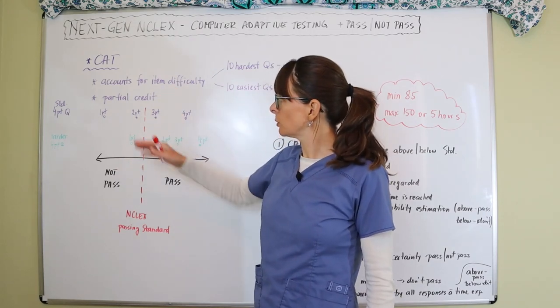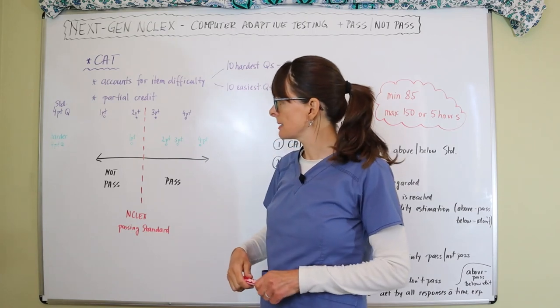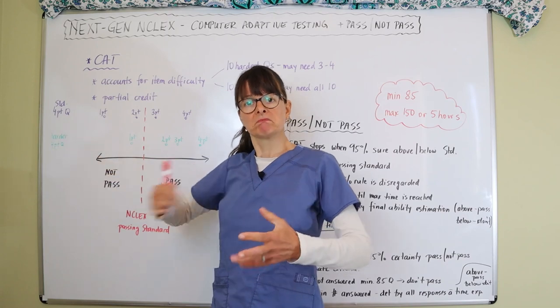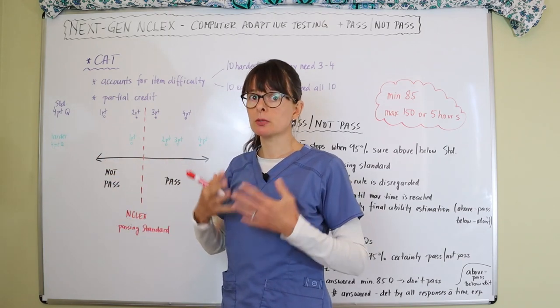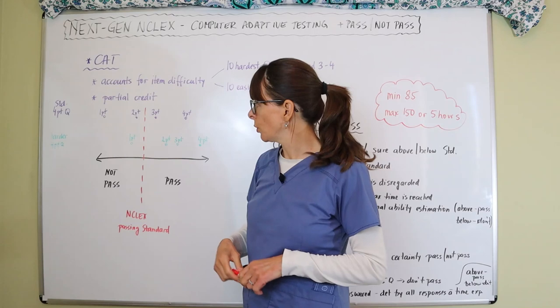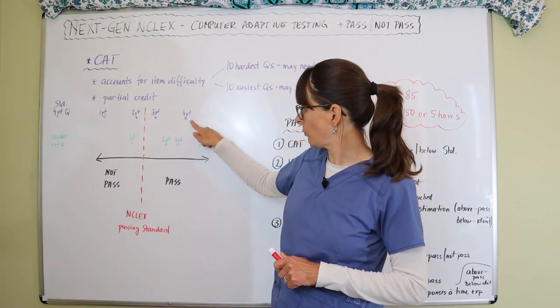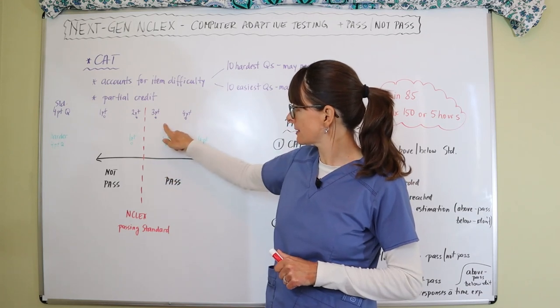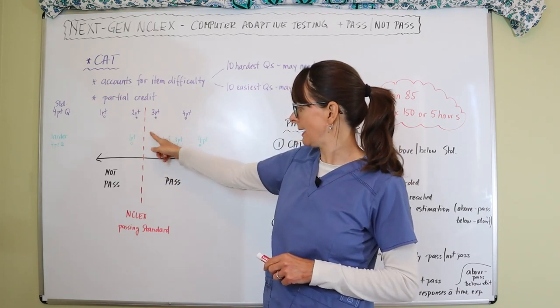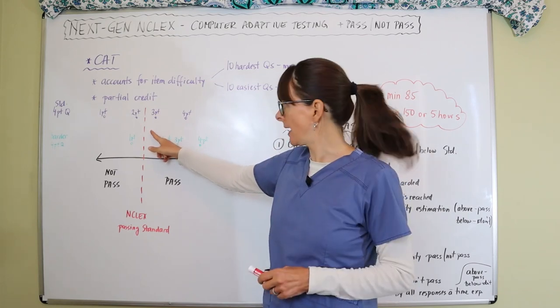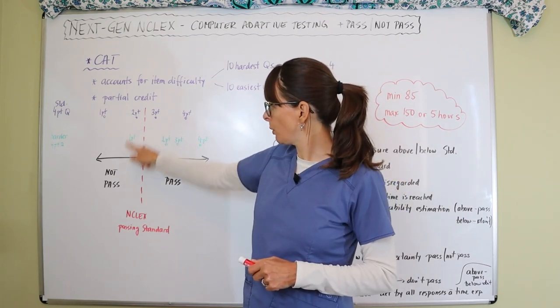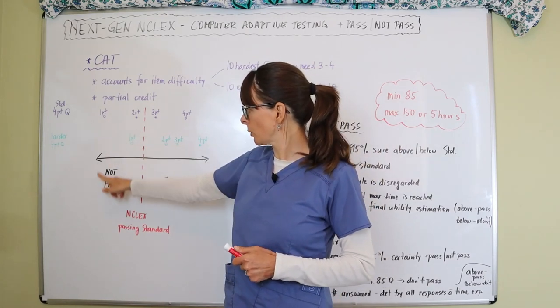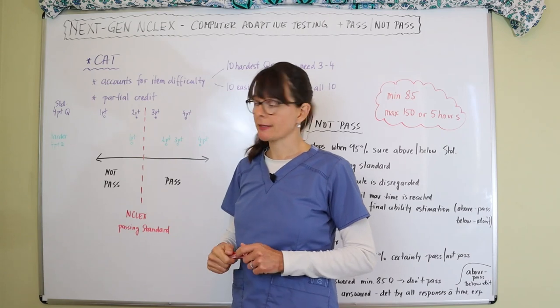The item difficulty in computer adaptive testing means you have a standard four-point question. This is an easier to medium ability question worth four points. If you get all four points, you score way over here. If you get three points, you're still in the passing section but closer to that teetering line. Two points is a not pass, and one point on this four-point question puts you definitely on the not passing side.